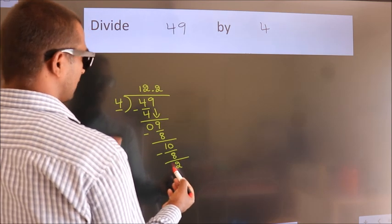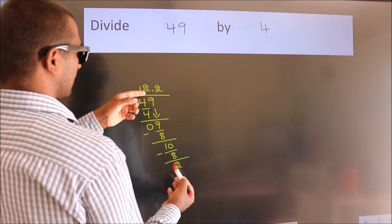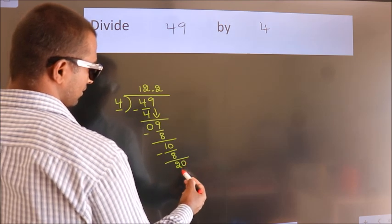After this, we already have the decimal, so directly take 0, so 20.